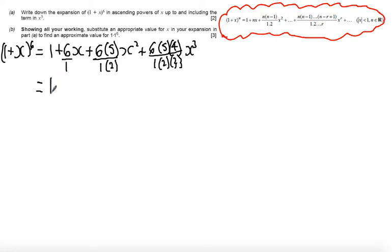When I simplify this, I get 1 plus 6x. Cancel terms, I get 3 times 5x squared, which is 15x squared. Cancel terms again, 2 times 3 is 6, so I get 5 times 4x cubed. So I get 20x cubed. That's part A done.